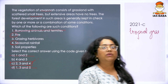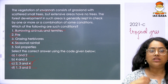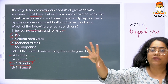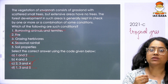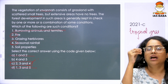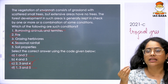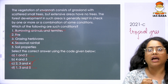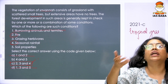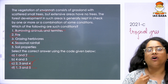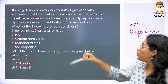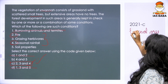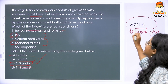Even the grazing herbivores — what happens is they constantly keep the grass in check. They move away, and if at all any kind of tree seeds or anything is there, it is taken in by these animals. So the tree growth is not aided by grazing herbivores. The answer to this question is C: two, three and four.